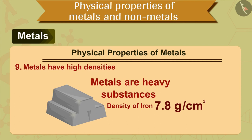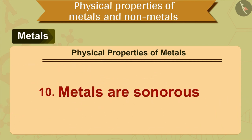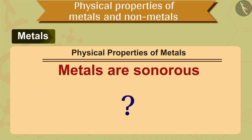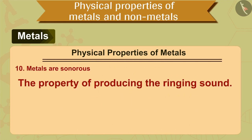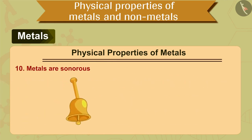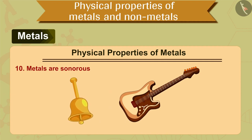The tenth property of metals is that metals are sonorous in nature. Do you know the meaning of sonorous? Sonorous means the property of producing a ringing sound. It is due to this property that metals are used for making bells and strings of musical instruments like guitar.